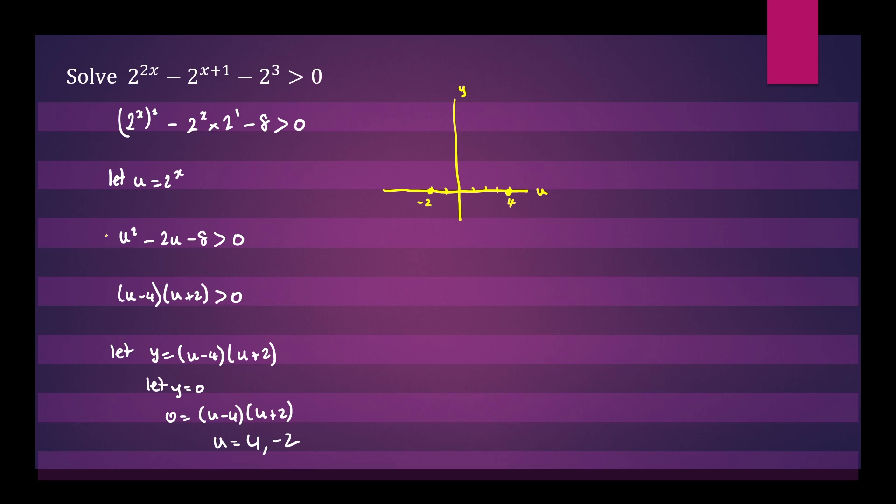Notice that u^2 has a positive coefficient, which means your graph will open upwards. So we can draw a quadratic like that.